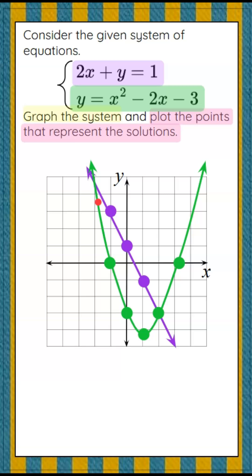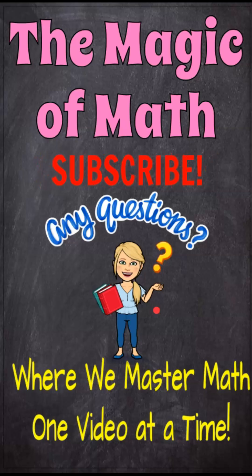Now I can look at my system and see that one solution, a point of intersection, is negative 2, 5, and the other point of intersection is positive 2, negative 3. And there are your solutions to your system.